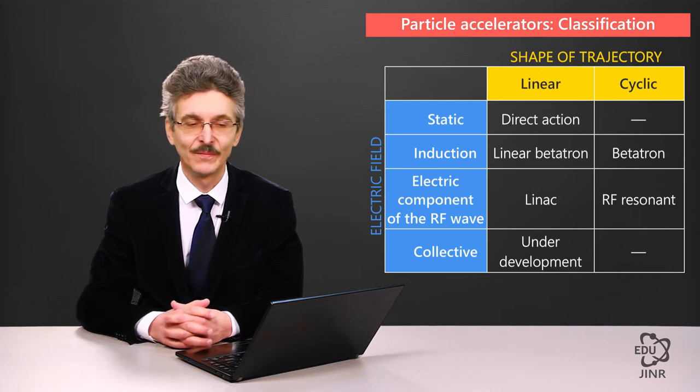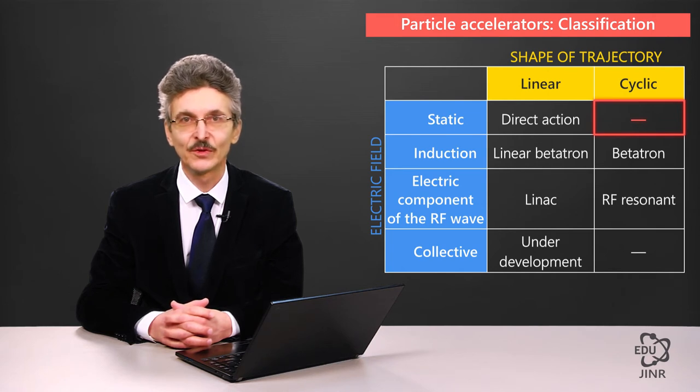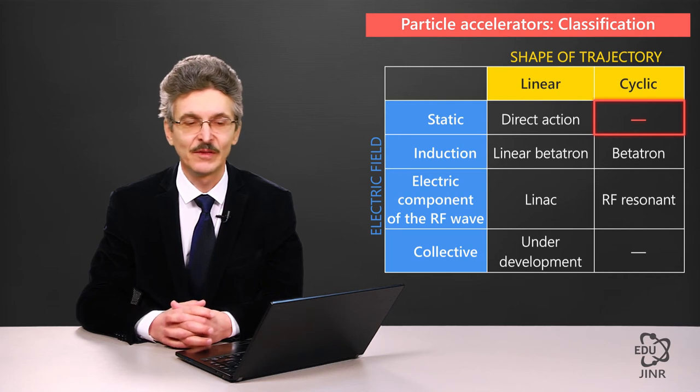Cyclic accelerators cannot use a static field for particle acceleration, because of the static field potential and the fact that one can repeatedly lead particles through the same segment with a static field. The increase in energy would depend only on the potential difference between the initial and the final trajectory point. That is why there are no static cyclic accelerators.